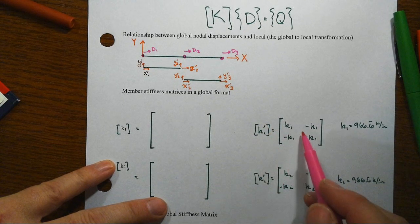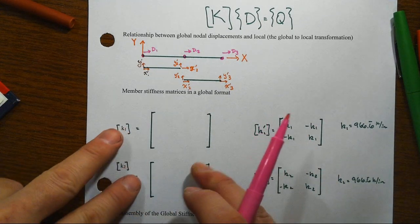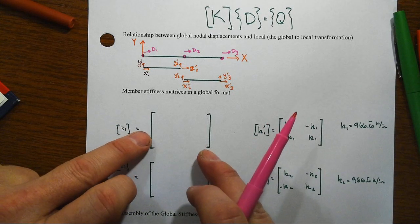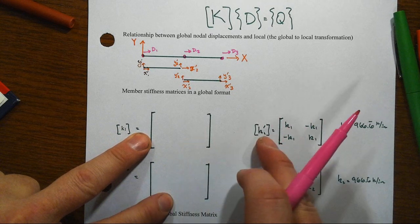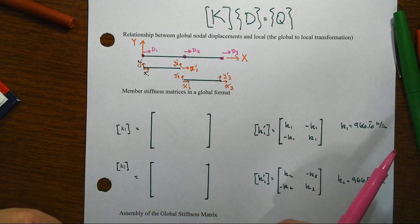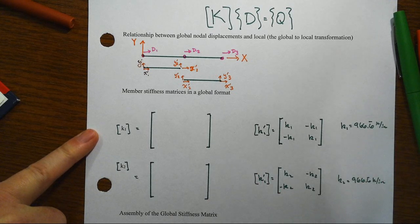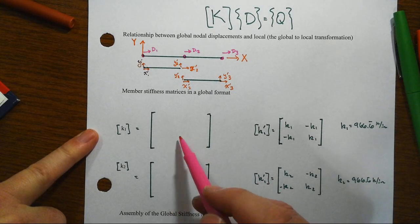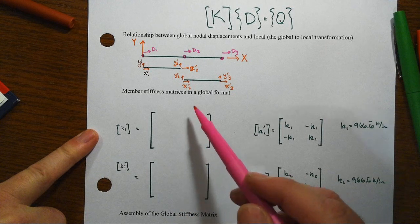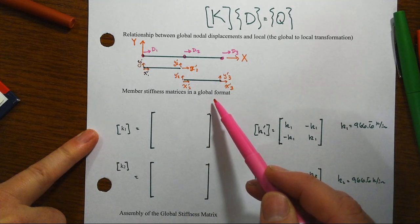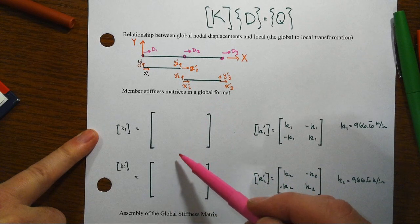So we're making a transformation from here to there is one of our first key steps. And then after we do that, then we're going to assemble these all together. And when we get it into the member stuff into the big global format, then all we actually have to do is just add these together to get to this big global structural stiffness matrix.